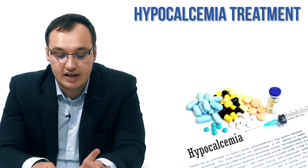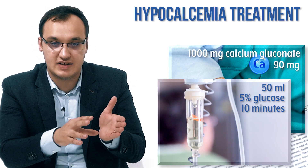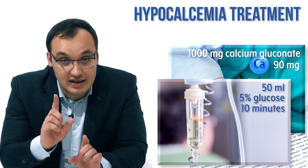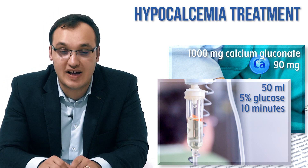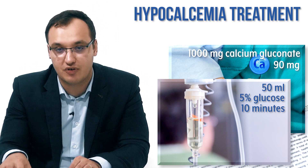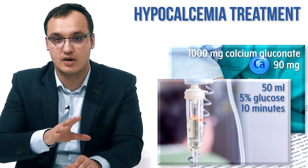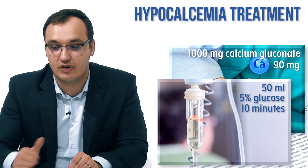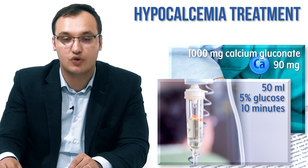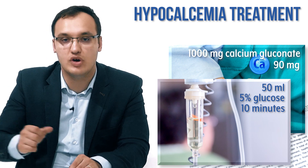For the intravenous quick dose: give 1 gram of calcium gluconate — which contains only 90 milligram of elemental calcium — into 50 milliliter of 5% dextrose, given over 10 minutes. Then check the calcium level after three to four hours. If the calcium is still low after four hours, start the slow infusion.